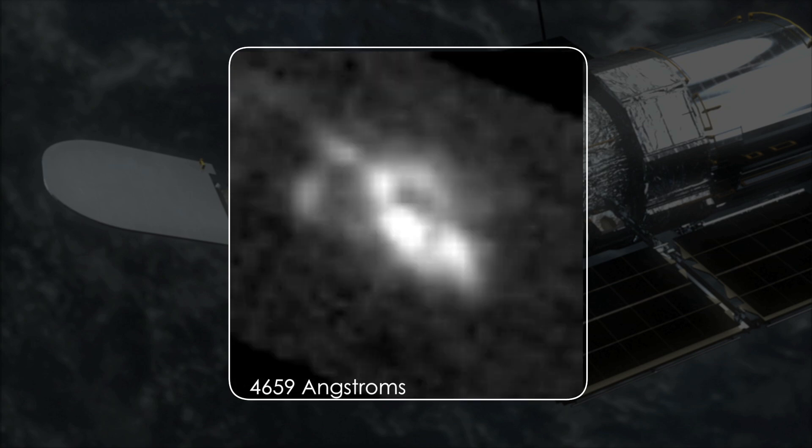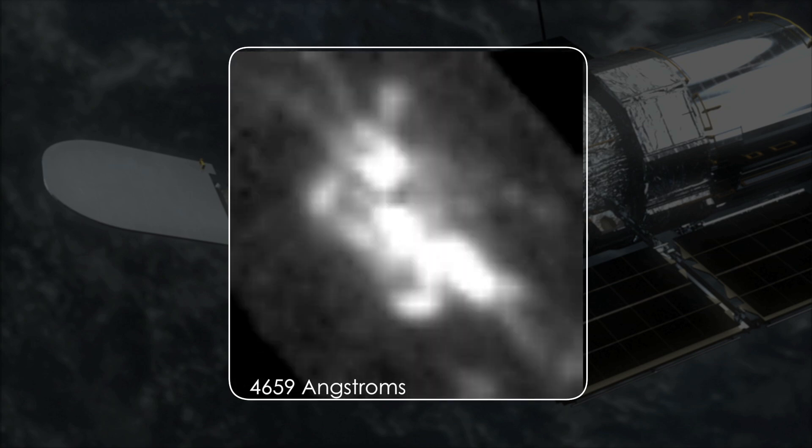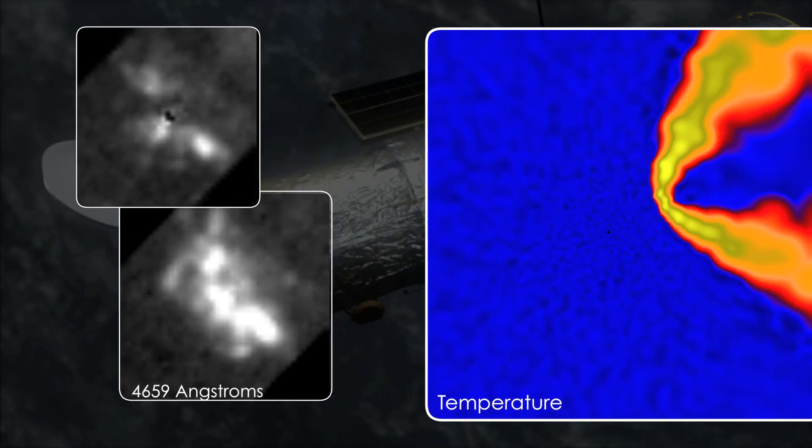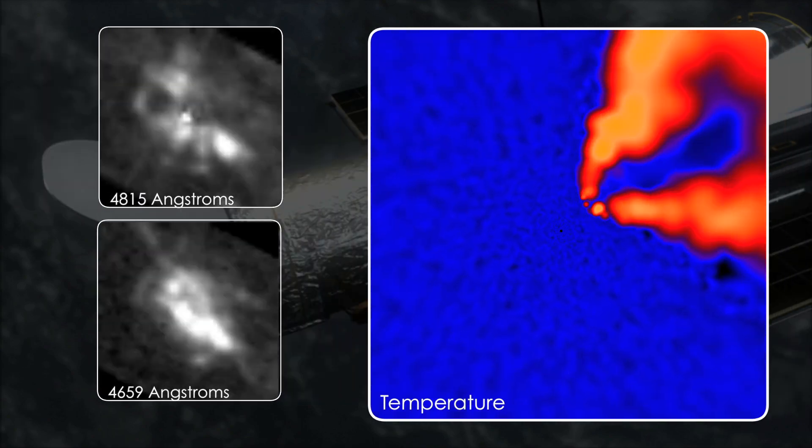This light dims near periastron when the secondary passes through the thickest part of the primary's wind. The gas relaxes, settling into a lower-energy state.